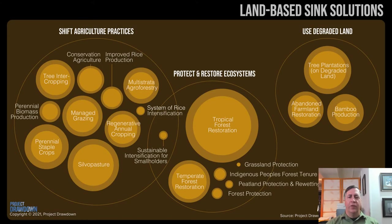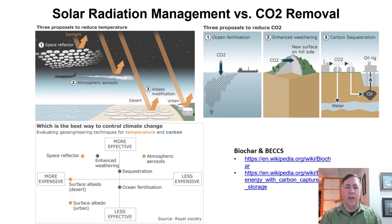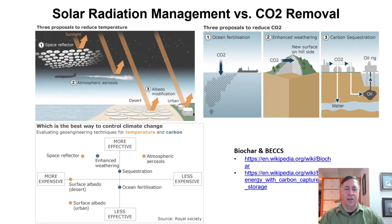Land sinks currently sequester 26% of human-caused carbon emissions, and coastal waters and oceans also trap greenhouse gases. Restoring degraded land and ecosystems can increase the amount of carbon pulled out of the atmosphere. Solar radiation management is a type of engineering to reduce the amount of solar energy reaching the Earth's surface by reflecting sunlight. Methods include deploying space reflectors, atmospheric aerosols, and reflectors in deserts and rooftops. Painting rooftops and parking lots white would reflect sunlight and reduce heat in urban areas, but a better solution is to cover them with solar panels, which would not only reduce solar heating but convert much of the sunlight to electricity.